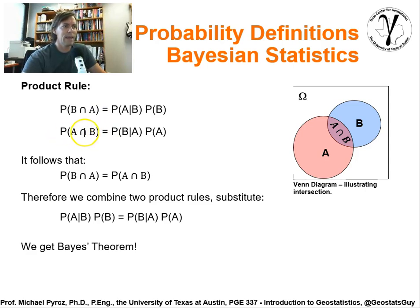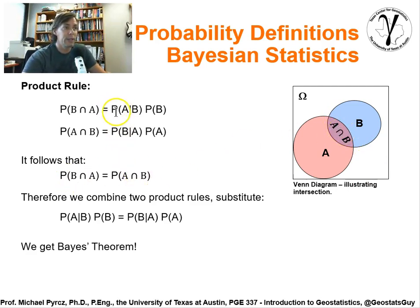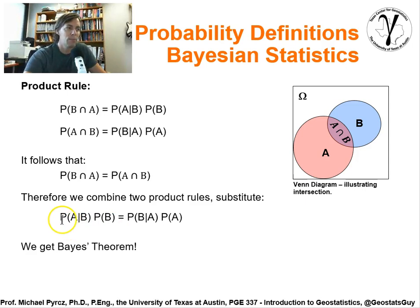The probability of A intersection with B can be written likewise. We take these two terms and recognize that they're equal to each other. There's no reason to suggest that if we reverse A and B, they would have different probabilities. So if they're equal to each other, we can take the right-hand sides and equate them to each other, and we get this relationship: the probability of A given B times the probability of B is equal to the probability of B given A times the probability of A.